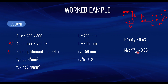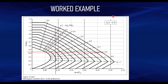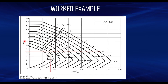After computing all parameters: N/bhfck = 0.43, M/bh²fck = 0.08, and d2/h = 0.2 — so we use the chart with d2/h = 0.2. Reading the vertical axis at N/bhfck = 0.43 (which lies between 0.4 and 0.5, closer to 0.45), we draw a horizontal line at 0.43. On the horizontal axis, M/bh²fck = 0.08 lies between 0.05 and 0.1, so we draw a vertical line at 0.08.